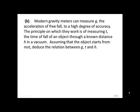Modern gravity meters can measure g, the acceleration of free fall, to a high degree of accuracy. The principle on which they work is measuring t, the time of fall of an object through a known distance h in a vacuum. Assuming that the object starts from rest, deduce the relation between g, t and h.